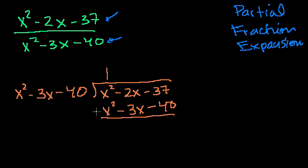And now you want to subtract this from that to get the remainder. So I'm going to subtract, and then minus, minus, that's a plus, a plus. And then you can add them. These cancel out. Minus 2x plus 3x, that's x. Minus 37 plus 40, that's plus 3.